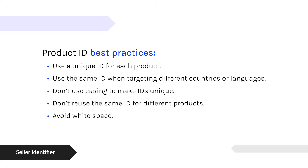They also say the SKU should be the same across countries and languages, because for tracking performance you want to know how that product is doing not just here but also in other countries. You shouldn't have a unique SKU for every region. That product in your catalog should have a SKU unique to your catalog. They don't want you to reuse it because of tracking — if you discontinue a product, you don't want to reuse that SKU for a new product because the history and performance data would then be tied to an old archived SKU. So you want to always make them unique across time and across your catalog.